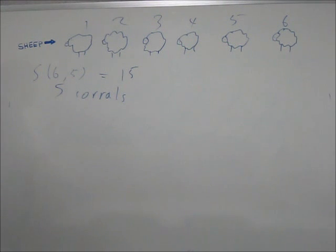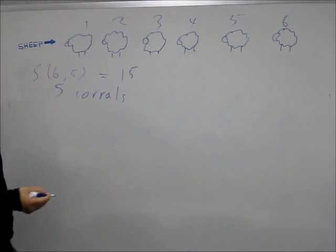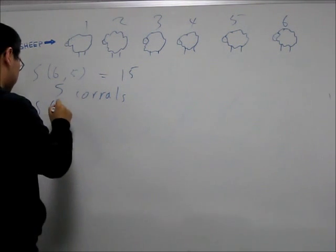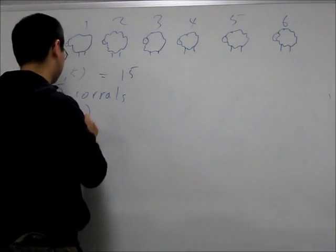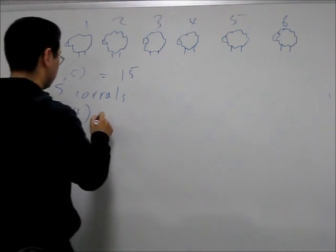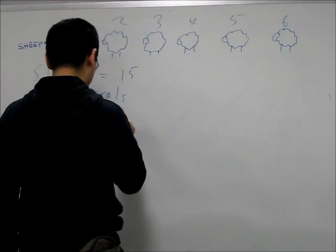Next, we're going to assume that one of the corrals is empty, in which case it's actually going to be putting 6 sheep into 4 corrals because there's 4 that aren't empty, and that's going to be 65.